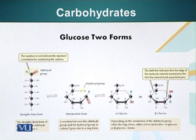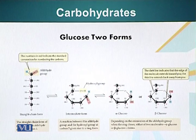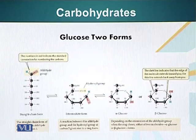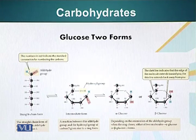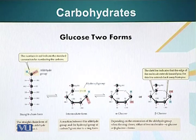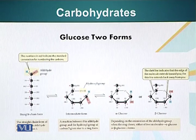Glucose, for example, can exist in two forms: a linear form and a circular form. When the glucose molecule circularizes, it has two choices — it can adopt an alpha configuration or a beta configuration, depending upon the orientation of the aldehyde group when the ring closes. In alpha glucose, the hydroxyl group is pointing downwards, whereas in beta glucose, the hydroxyl group is pointing upwards. The consequence of this organization of atoms is very significant, which will become clear in subsequent modules.